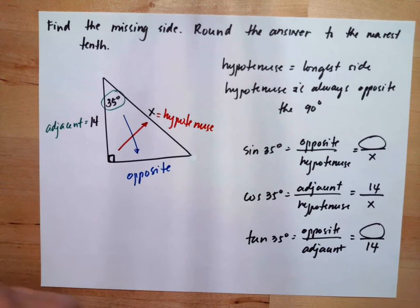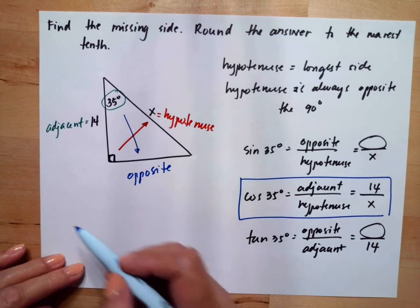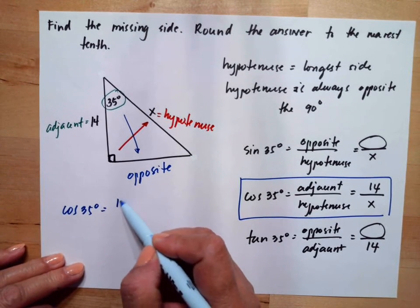So the only formula we can use is cosine. So we will use cosine 35 degrees equals 14 over x.